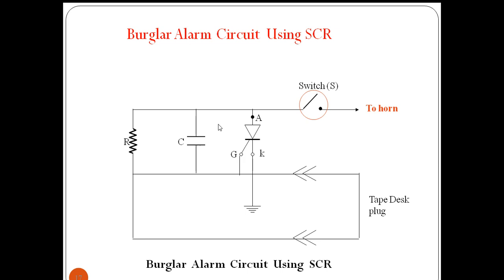This is the connection diagram of the burglar alarm. It mainly consists of a thyristor (SCR), a resistance, and a capacitance. The gate circuit is normally grounded through the tape deck plug. The circuit also has a switch connected to the horn, and the whole circuit is connected to a single-phase AC supply. The horn is in series with the single-phase AC supply and switch through the thyristor.